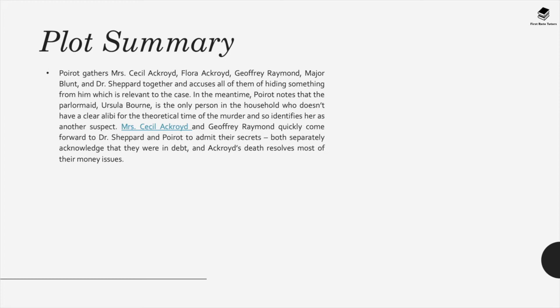Poirot gathers Mrs. Cecilia Ackroyd, Flora, Geoffrey Raymond, Major Blunt, and Dr. Shepard together and accuses all of them of hiding something from him which is relevant to the case. In the meantime, Poirot notes that the parlor maid Ursula Bourne is the only person in the household who doesn't have a clear alibi for the theoretical time of the murder and so identifies her as another suspect. Mrs. Cecil Ackroyd and Geoffrey Raymond quickly come forward to Dr. Shepard and Poirot to admit their secrets. Both separately acknowledge that they were in debt and Ackroyd's death resolves most of their money issues.